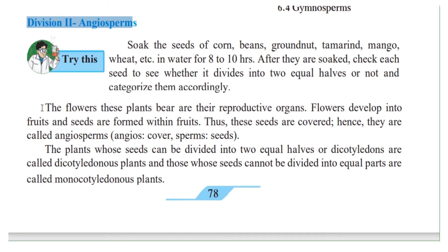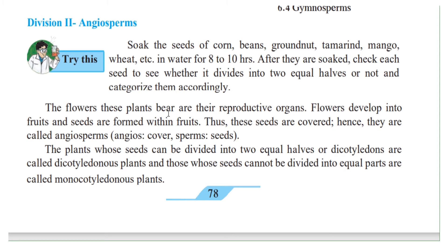In angiosperms, the flowers of these plants are their reproductive organs. Flowers develop into fruits and the seeds are formed within the fruits — thus these seeds are covered. We find that the seeds are enclosed inside the fruit, unlike gymnosperms where the seeds are open. Here the seeds are enclosed inside the fruit, and hence they are called angiosperms.